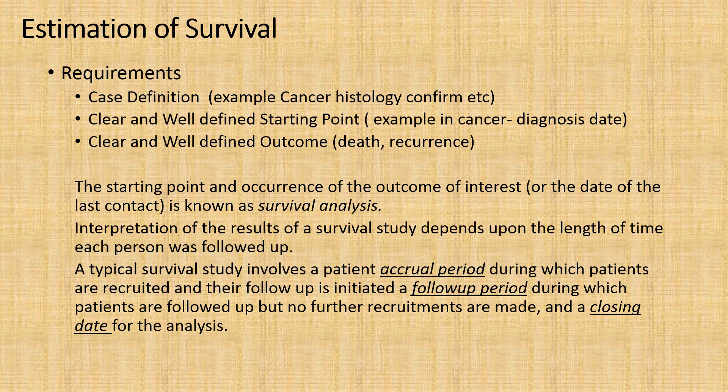The third thing would be a clearly defined outcome. In most cases we rely on alive or dead, but the outcome may be a recurrence of a disease or any other event — it could be death or it could be a reoccurrence. So the duration between the starting point and the occurrence of the outcome of interest, or the date of last contact, is what is known as survival time. We will elaborate on the date of last contact in subsequent slides.